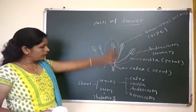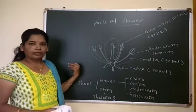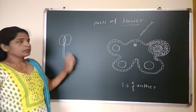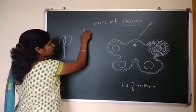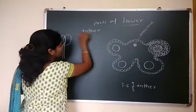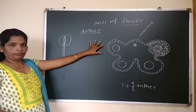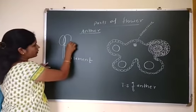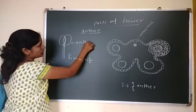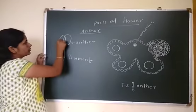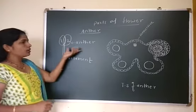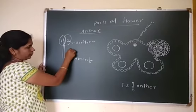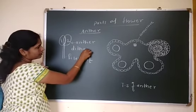This is about the different parts of a flower. Next we will study about the anther and details of its structure. A stamen consists of a filament and an anther. Mostly anthers have two lobes, so such an anther is called a bilobed or dithecous anther.